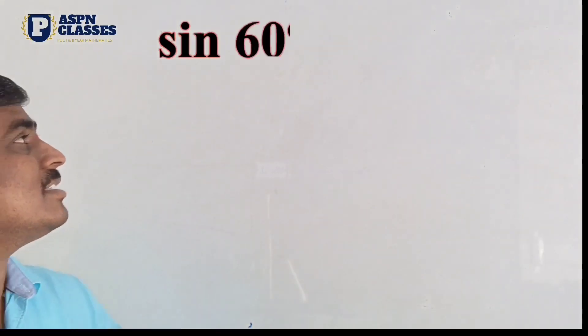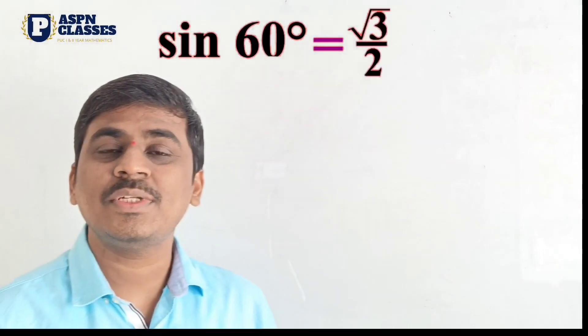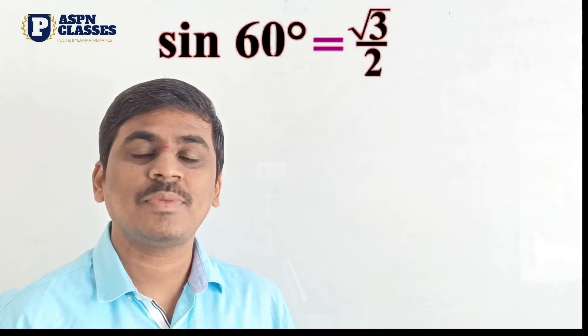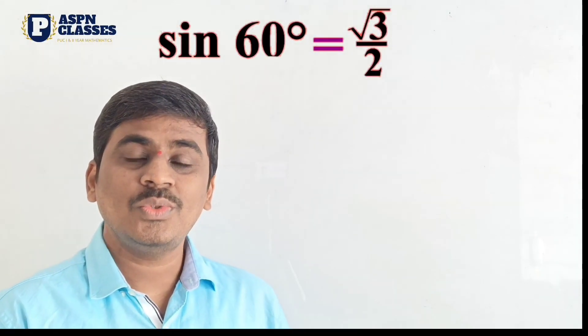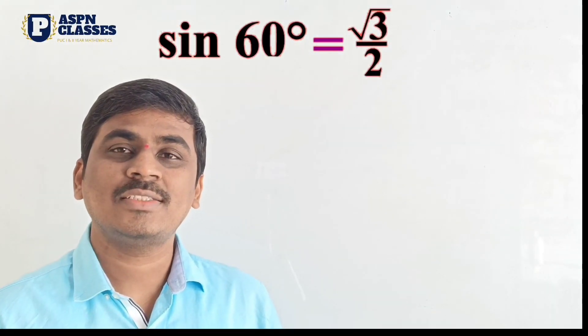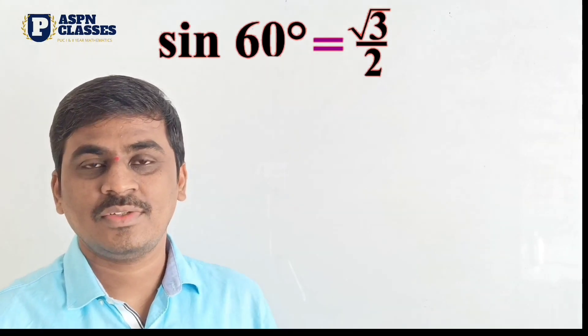Sin(60°) is equal to √3/2. So if we go back to the equilateral triangle to find this value.